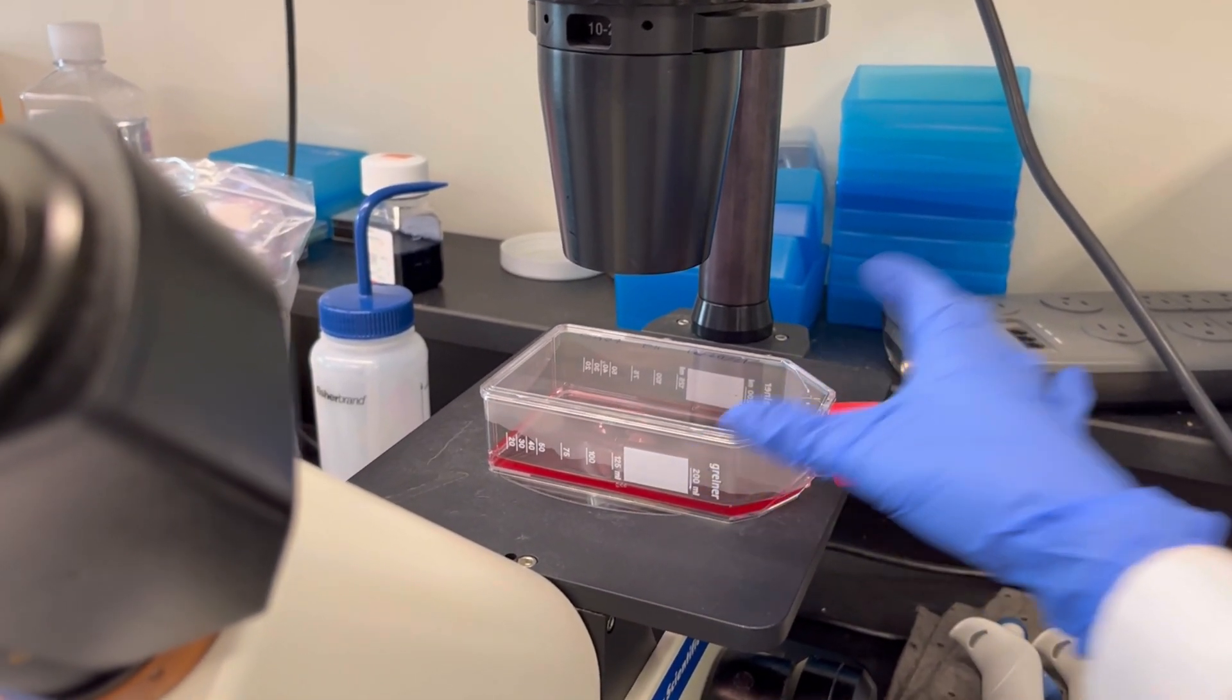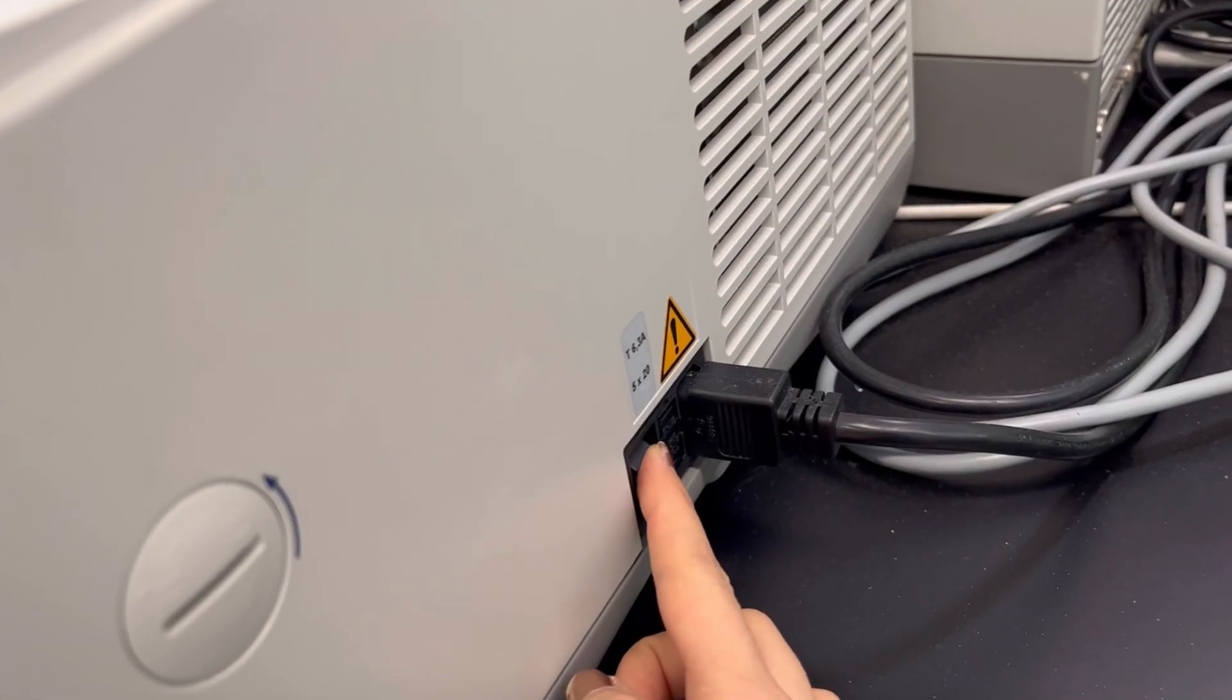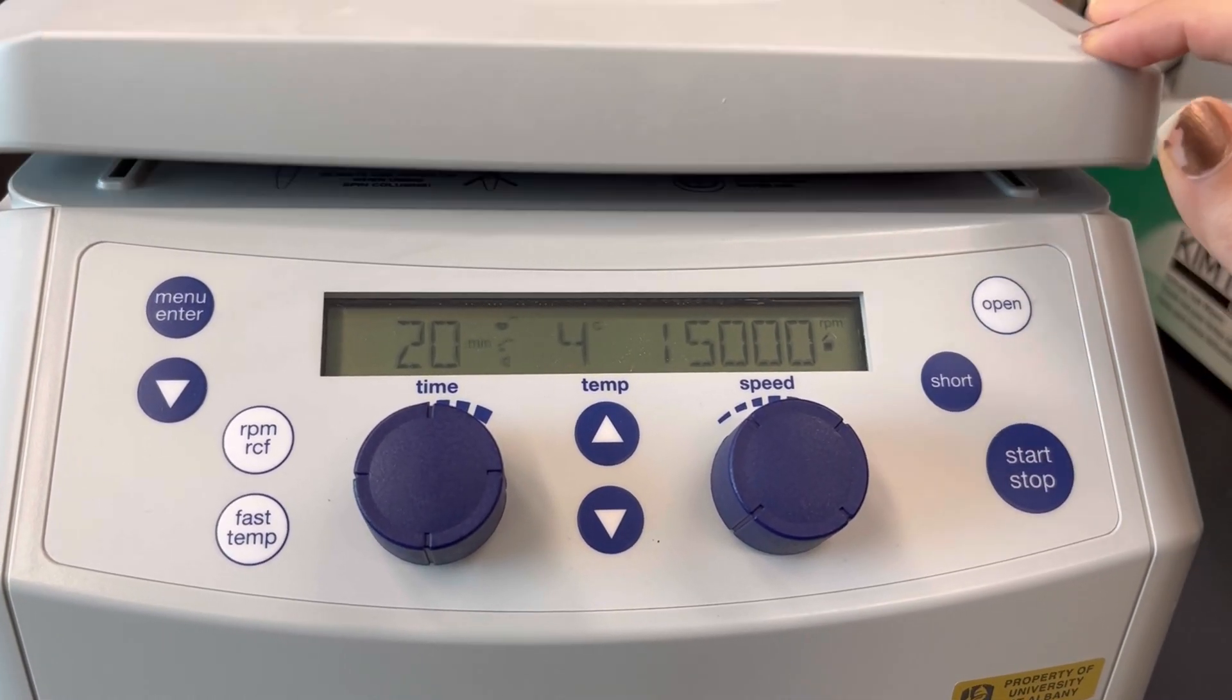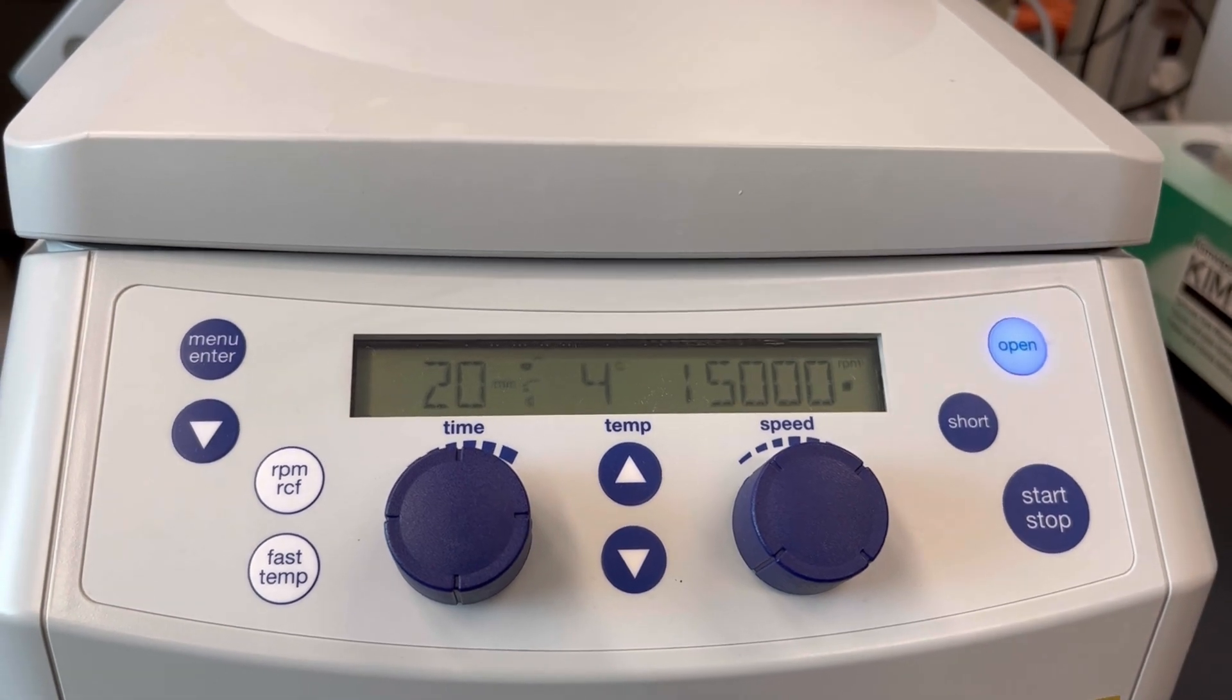Monitor your cells before an experiment to make sure they are healthy. Turn on the centrifuge and set it to 4 degrees Celsius.